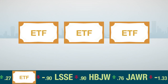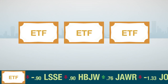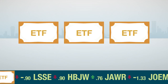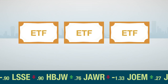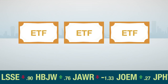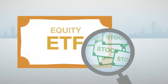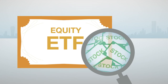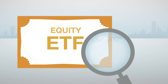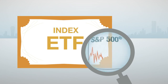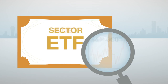Just like there are a variety of mutual funds, there are a variety of different ETFs, each with different objectives. Some ETFs invest in a variety of stocks and bonds. Some replicate the performance of a stock index, like the Dow Jones Industrial Average or S&P 500, and others track the performance of a particular market sector, like technology or pharmaceuticals.